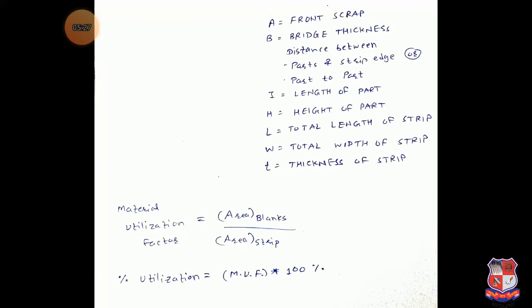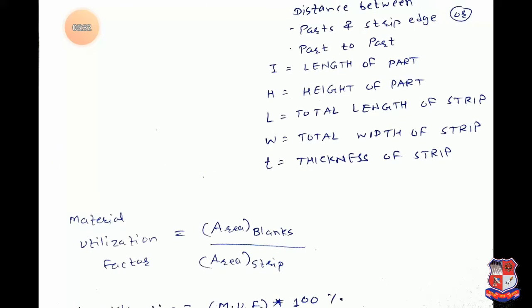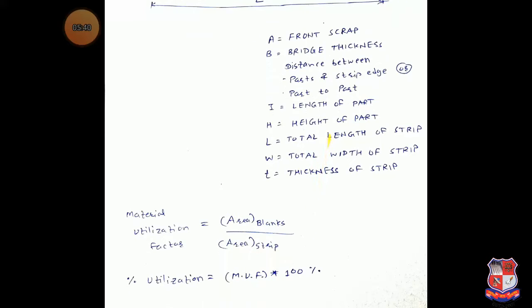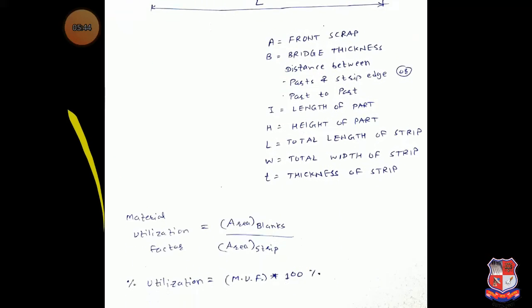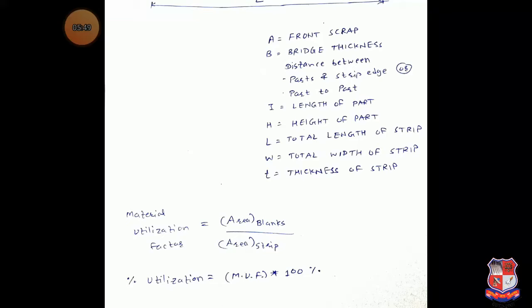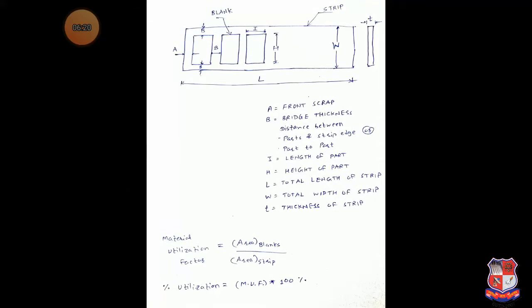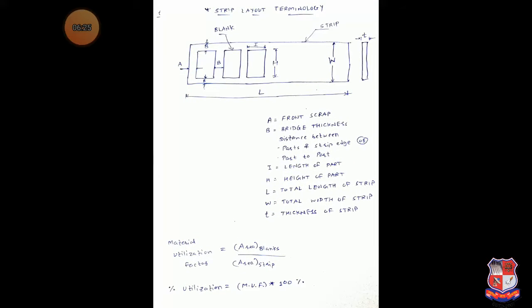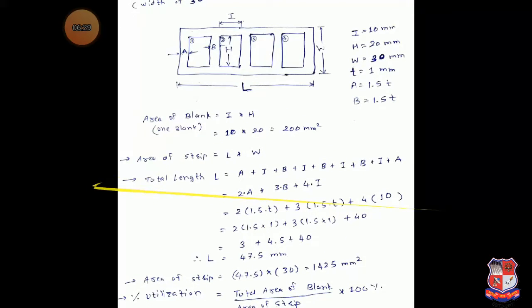There is one important formula related to material utilization. The material utilization factor (MUF) equals the area of blanks divided by the area of the strip. Percentage utilization equals MUF multiplied by 100%. This percentage tells us how much material has been used and how much has been wasted. It should be as high as possible — generally more than 70%. This utilization changes when you change the layout of the blanks.